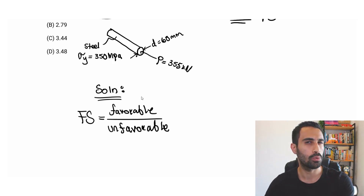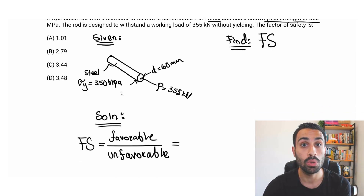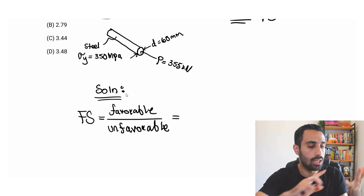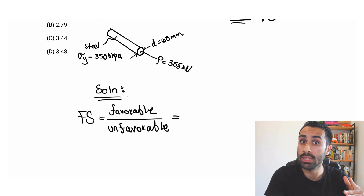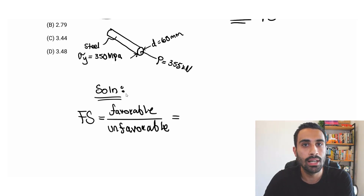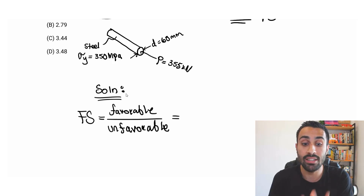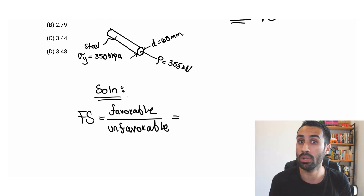What do we mean by favorable and unfavorable? It depends on the context, but this concept can be applied to anything — favorable forces over unfavorable forces, favorable moments over unfavorable moments, shear stresses, tensile stresses, compressive stresses, and so on. That's why the factor of safety is so important and we must understand what it really means.